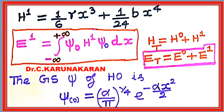Therefore, the total Hamiltonian, according to perturbation theory, is split into two parts: the unperturbed term and the perturbation term. Therefore, the total energy is the sum of the unperturbed energy and the first-order perturbation energy. The perturbation Hamiltonian is given here, and the first-order perturbation energy E' is calculated using the average value theorem, or expectation value theorem — a formula we have already studied in the postulates of quantum mechanics.